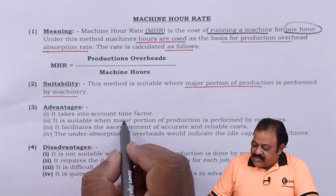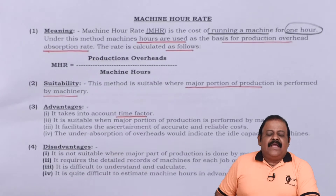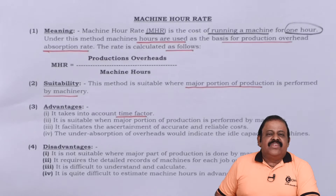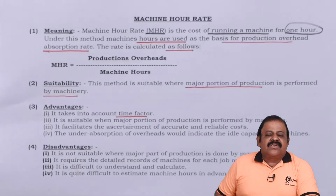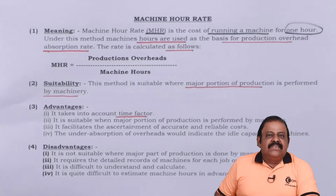Regarding advantages: it takes into account the time factor. Time and effort are the two parameters on which cost is measured — how much time is devoted and how much effort is put to produce a particular product. Therefore, in this method, as machine hours are based on the time concept, it has more advantage.